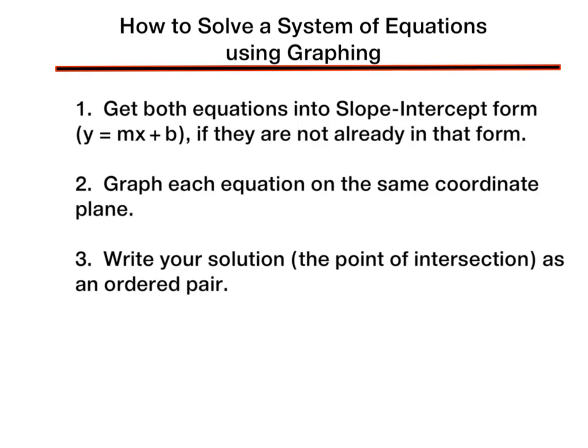Let's talk about the steps for how to solve a system of equations using graphing. Step 1: get both of your equations into slope-intercept form — y equals mx plus b — if they are not already in that form. Step 2: graph each equation on the same coordinate plane, meaning you'll have two lines on the same graph. Step 3: write your solution, which is the point of intersection where the lines cross, as an ordered pair — two numbers separated by a comma and surrounded by parentheses.